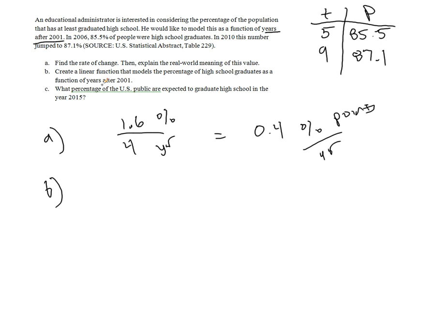In part B, we want to create a linear model that models a percentage, which we'll call P, of high school graduates, as a function of years after 2001, we'll call that T. So we want to find something in the form P as a function of T. Well, we know that we really don't know what it is in 2001, so we don't know the initial value. That's a problem.